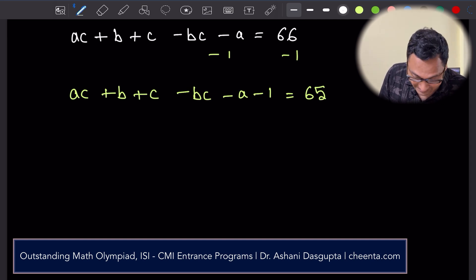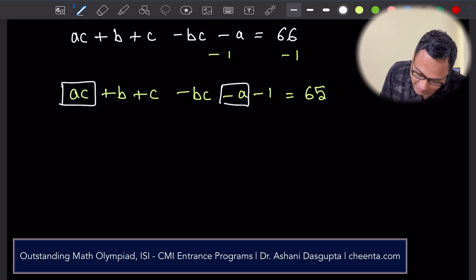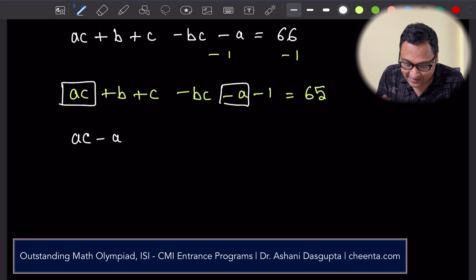Okay, all right. So now that we have this, let us go ahead and do the factorization. I'll use ac minus a, so I can take a common, I get c minus one.